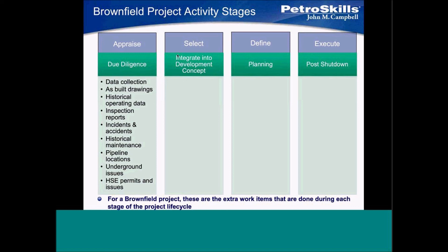So here are some items — and I'm going to show you a case study toward the end of the session. For due diligence, we'll talk about these in detail: data collection, as-built drawings, historical operating data, inspection reports, incidents and accidents. What's the historical maintenance on the unit or vessel? Pipeline locations, underground issues, permits and issues — what kind of permits are you potentially going to have to have when you're working out there? These are all extra items over and above your typical stage gate process.